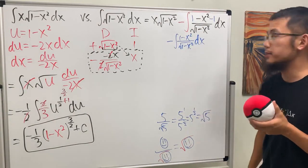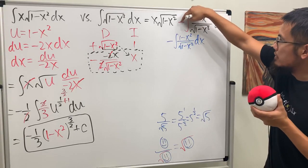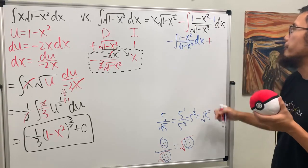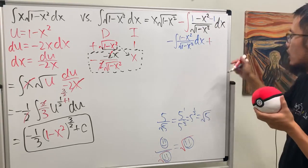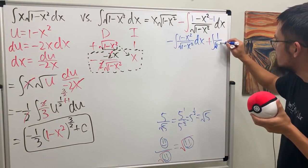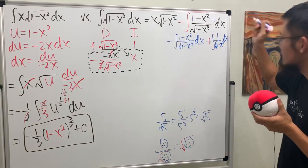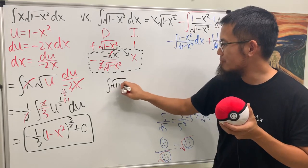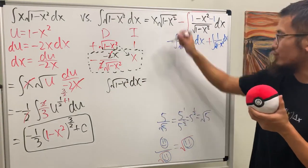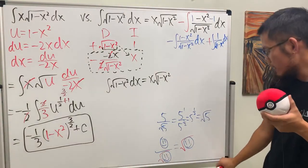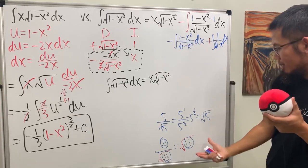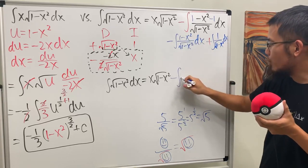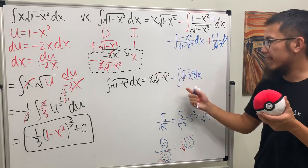We are about to use this simplification idea. The expression (1 minus x squared) over the square root of (1 minus x squared) is just the square root of 1 minus x squared — this is like the 'square root of happy face' theorem: a quantity over its own square root equals that square root. So this part becomes negative the integral of the square root of 1 minus x squared dx. Does this look familiar? Yes — that's exactly what we have on the left-hand side. This is a repeating situation for the DI method.